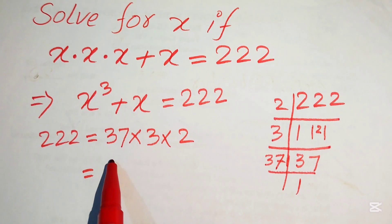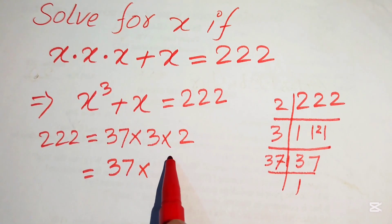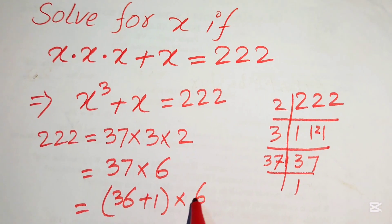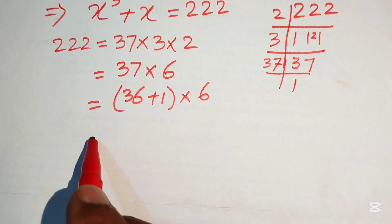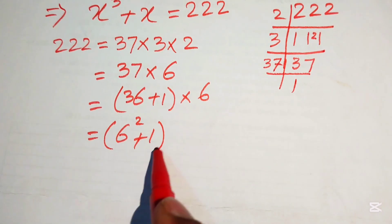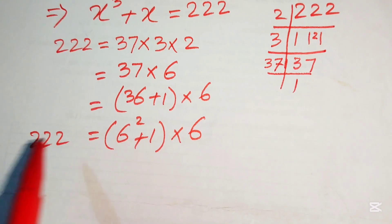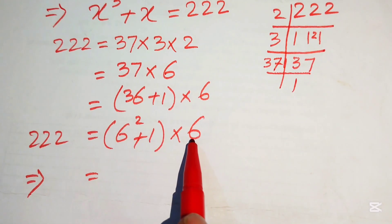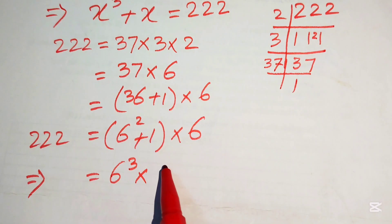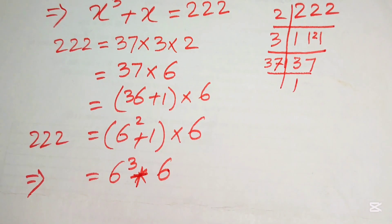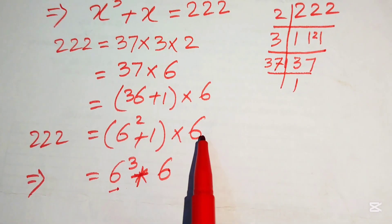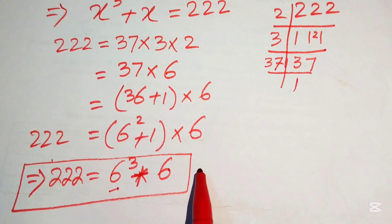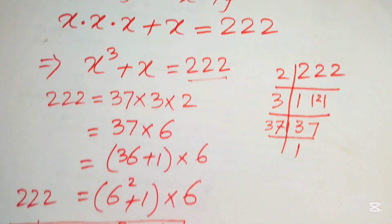Multiplying 3 times 2 gives 6, and we rewrite 37 as 36 plus 1, multiplied by 6. Then 36 is written as 6 squared, so we have (6² + 1) times 6. Distributing, that gives 6 cubed plus 6. So 222 equals 6³ + 6.